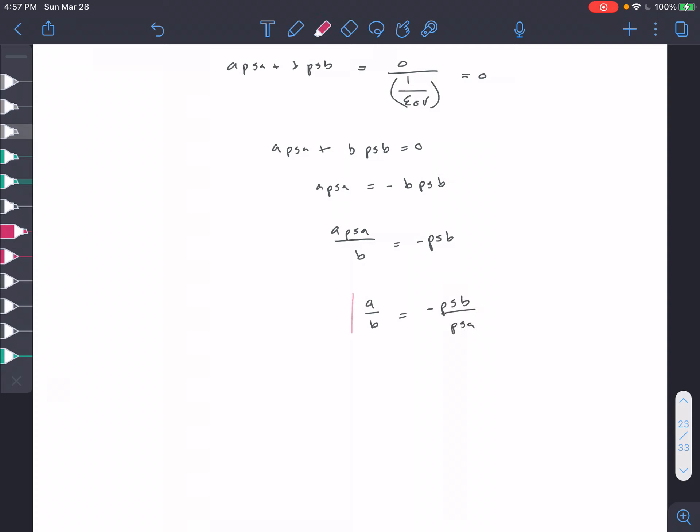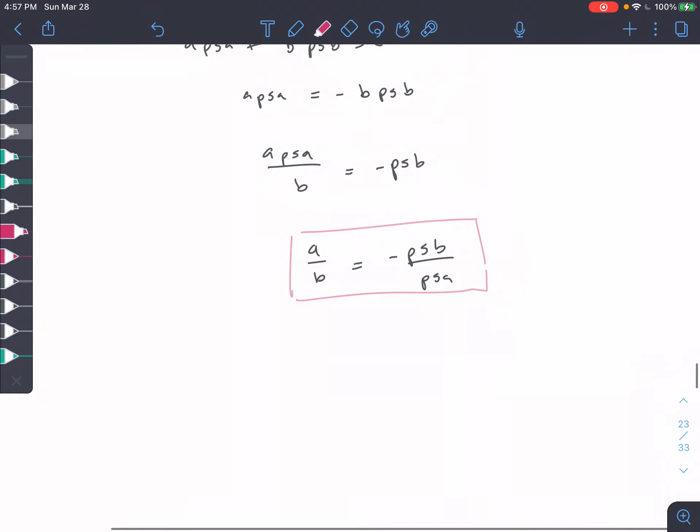It's just algebra here, and this would be your solution. So the ratio of A over B would set the E field equal to 0 so long as it's equal to the negative ratio of ρ_SB over ρ_SA.